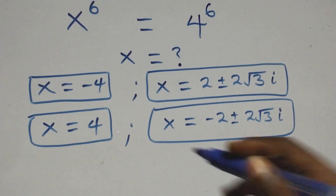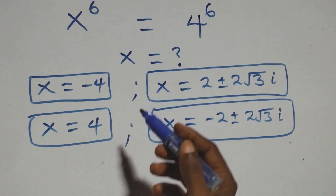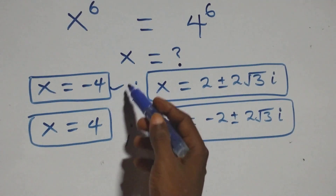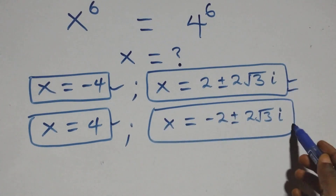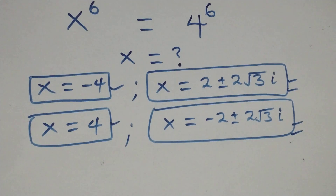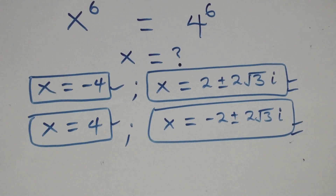Therefore, all together we have six solutions in this given problem: two real solutions, two complex solutions from the first case, and two complex solutions from the second case. Thank you for watching. Don't forget to subscribe for more videos, turn on the notification bell, share this video, give a thumbs up, put a comment, and see you next class. Bye for now.